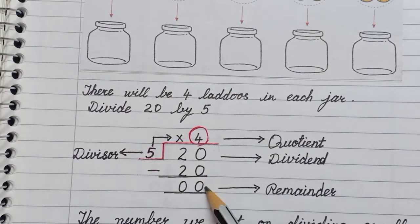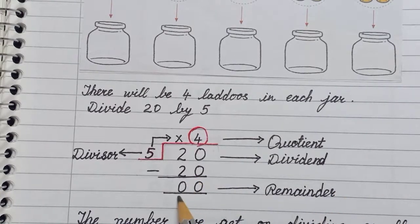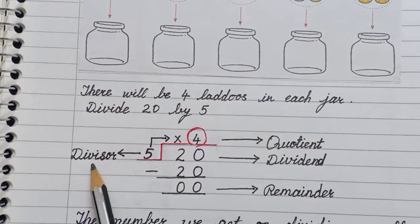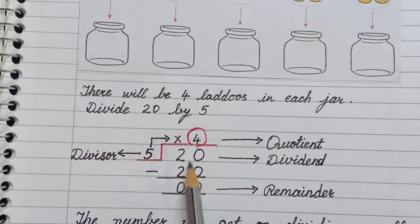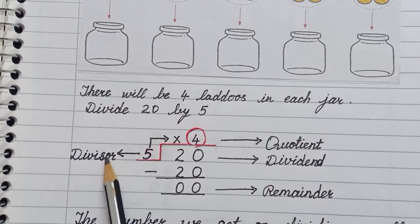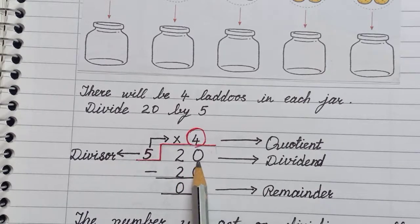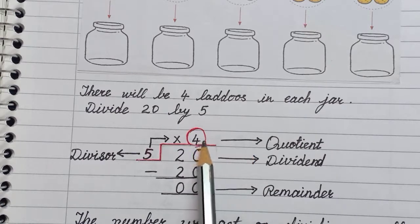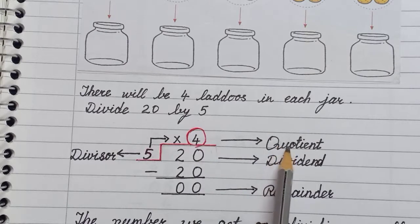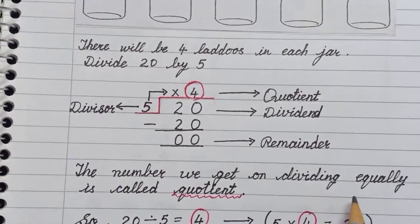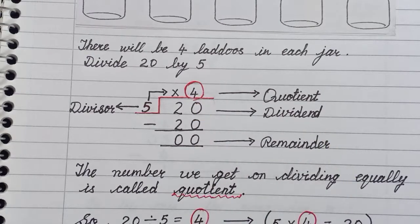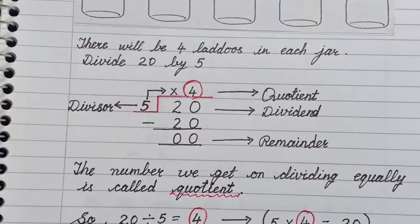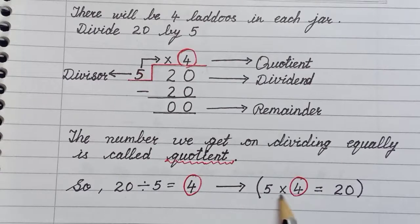Now, what is a remainder? The number left at the end is called the remainder. The number we divide is called the divisor — here 5 is the divisor. The number being divided, 20, is called the dividend. The answer we got, 4, is called the quotient. The number we get on top after dividing equally is the quotient. So 20 divided by 5 is 4, or in multiplication form: 5 into 4 is 20.